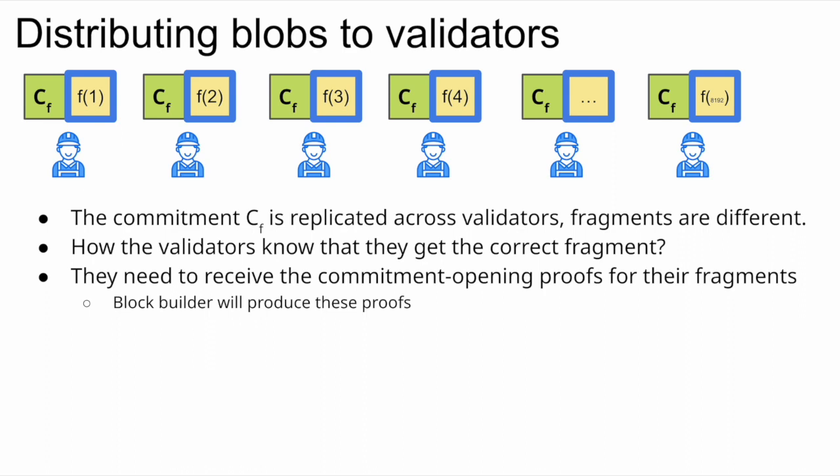This allows dispersion of data. We take the extended vector of 8192 elements and give each validator one element. If some validators go Byzantine or drop their fragments, as long as 50% of validators are honest and keep their fragments, we can always reconstruct all the data. The commitment to polynomial f is fully replicated to the validator set, but the actual vector is split into fragments. The block builder does heavy computation to extend the data blob, disperse elements, and produce evaluation opening proofs so validators can verify their fragments correspond to the actual commitments.